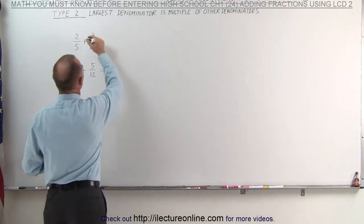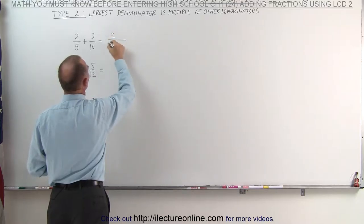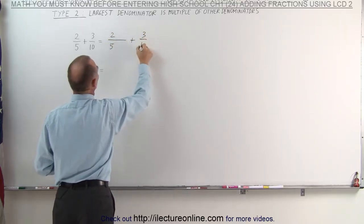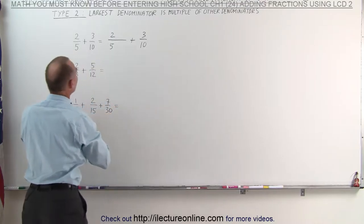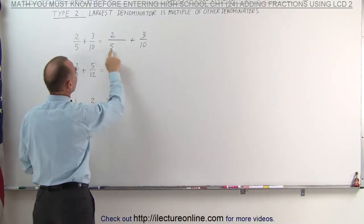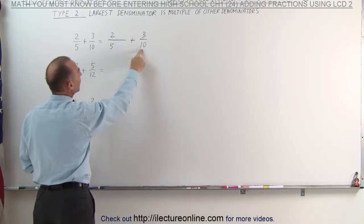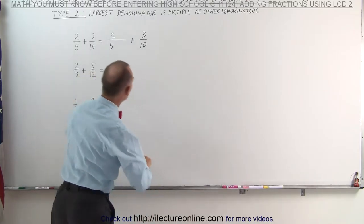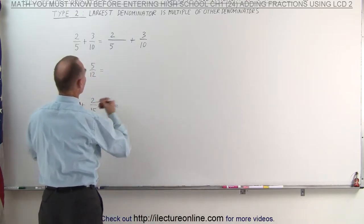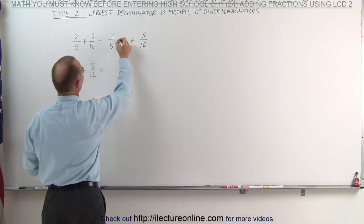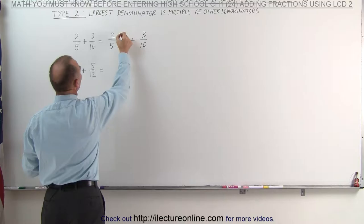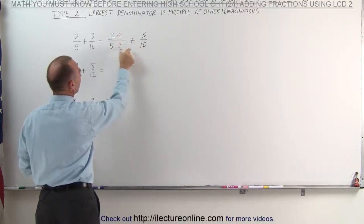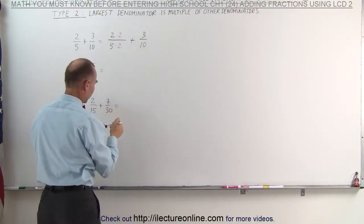The first fraction can be written as follows. The second fraction will not change. What we're going to do here is multiply the denominator times 2 to make it equal to the denominator of the other fraction. When we multiply the denominator times 2, we must also multiply the numerator times 2. What we're trying to do is make sure that the denominators are equal in size.